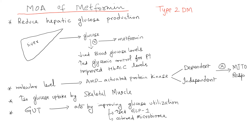The ultimate goal of all these mechanisms is to decrease blood sugar levels. In patients who are diabetic, they generally have elevated blood sugar levels. So in all the mechanisms we'll discuss, our aim is to decrease blood sugar levels. Still, research is ongoing to understand exactly the pathway through which metformin exerts its effect.